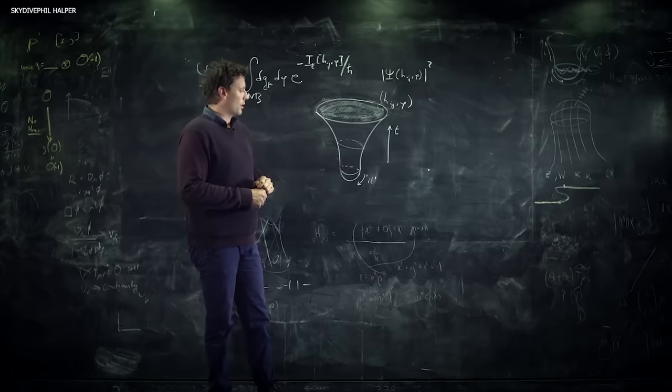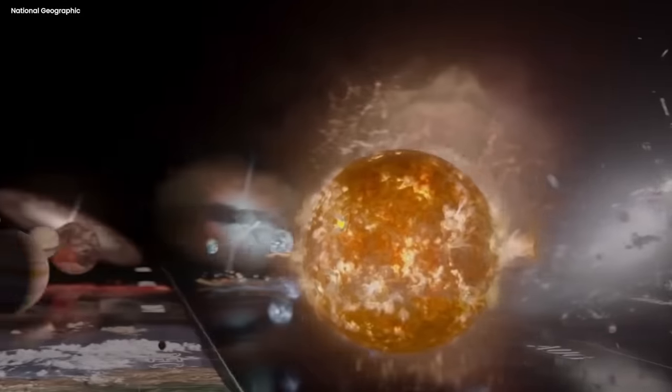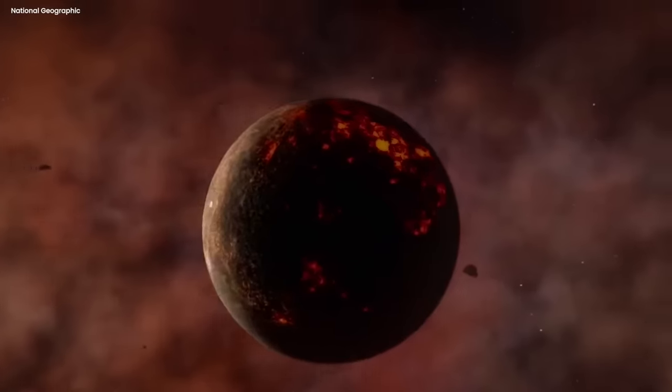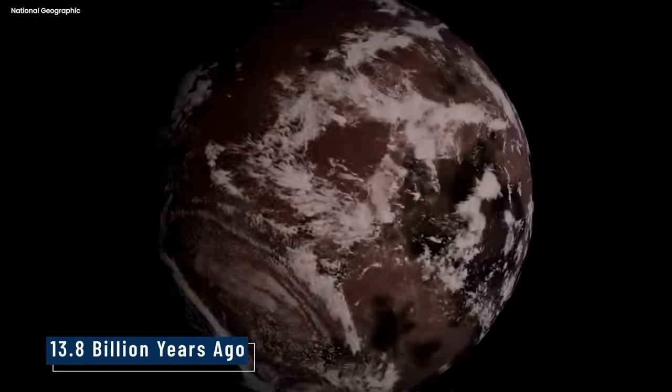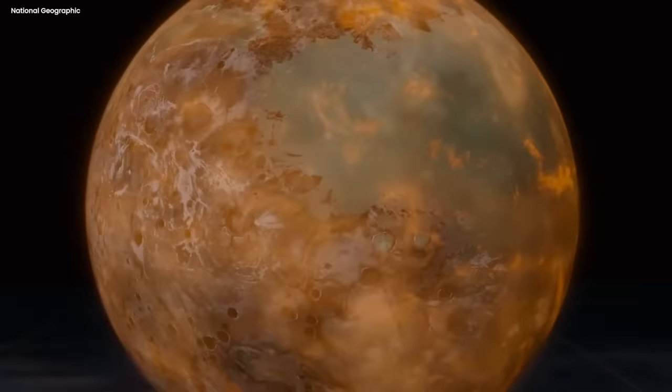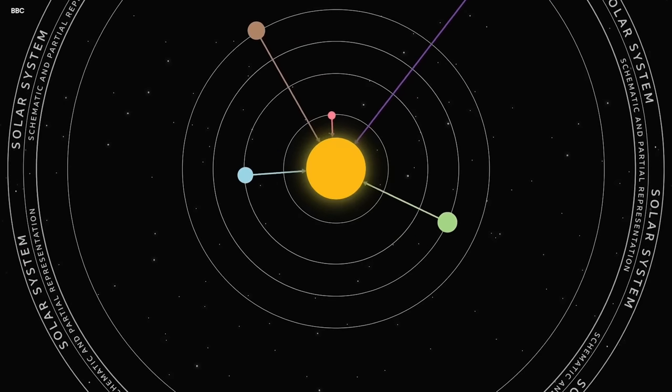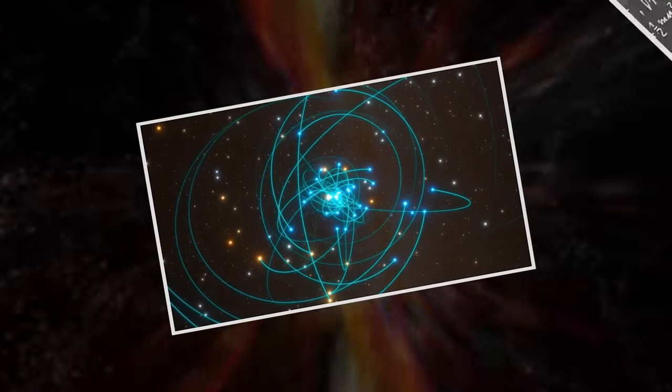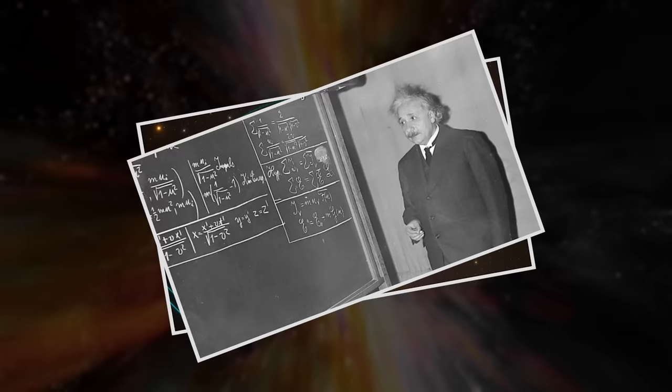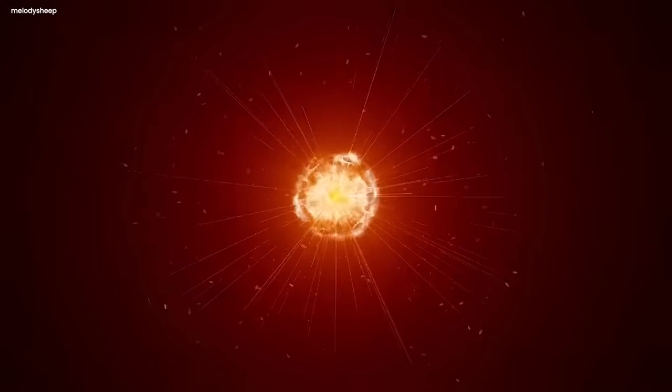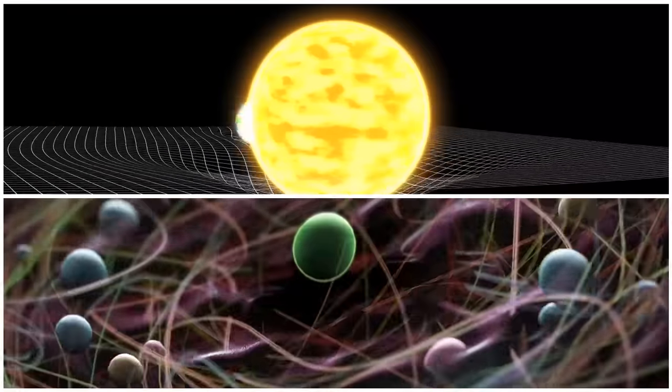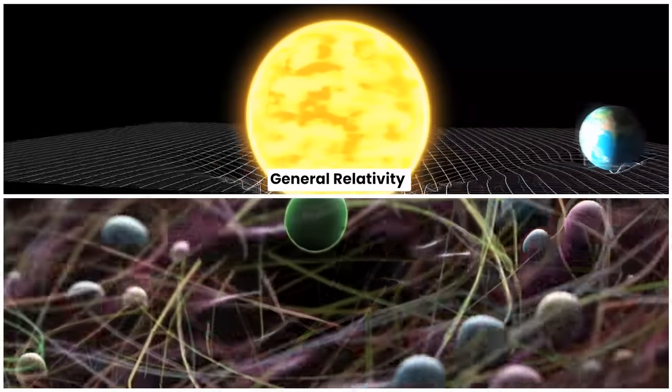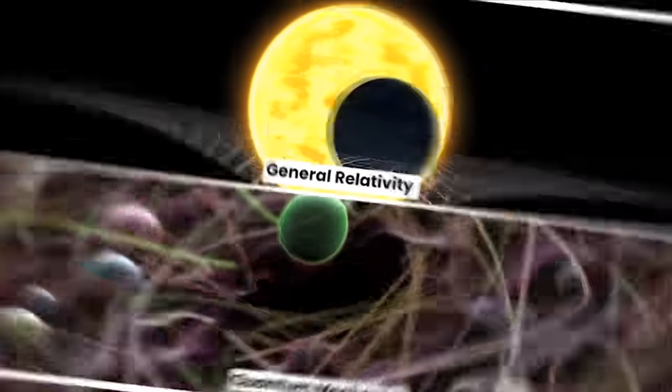When we delve into the study of the Big Bang Singularity, a fundamental challenge arises. According to the theory, the universe originated from an exceedingly hot and dense state approximately 13.8 billion years ago. However, as we rewind time toward this initial state, the equations of general relativity, which govern the behavior of gravity, break down. This breakdown implies that our current understanding of physics falls short in describing the conditions at the moment of the Big Bang. To resolve this issue, we require a theory that harmonizes general relativity with the principles of quantum mechanics.